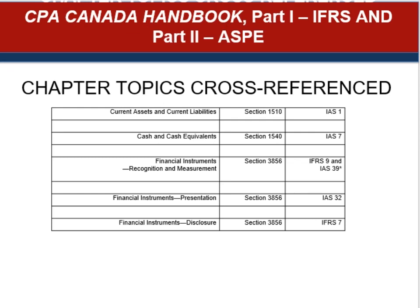The handbook references are given here. Current assets and current liabilities are included in Section 1510 of the ASPE standards and International Accounting Standard No. 1. Cash and Cash Equivalents are in Section 1540 and IAS 7. Financial Instruments for Recognition and Measurement are in Section 3856 in ASPE, IFRS 9, and IAS 39 to a lesser extent. Financial Instruments presentation is discussed in Section 3856 and IAS 32. Disclosure is in Section 3856 for ASPE and IFRS 7.